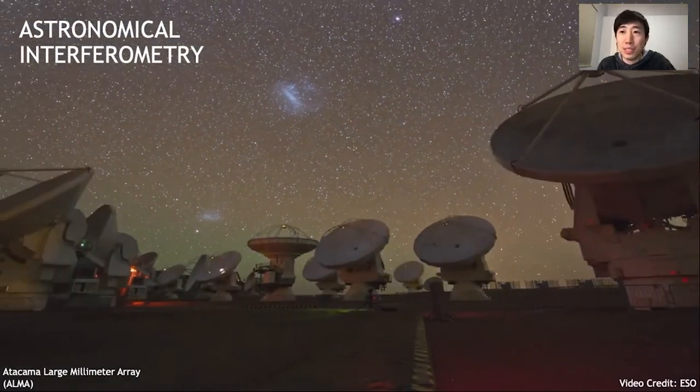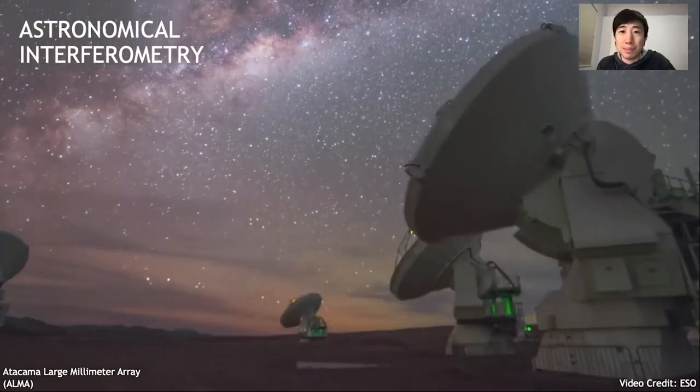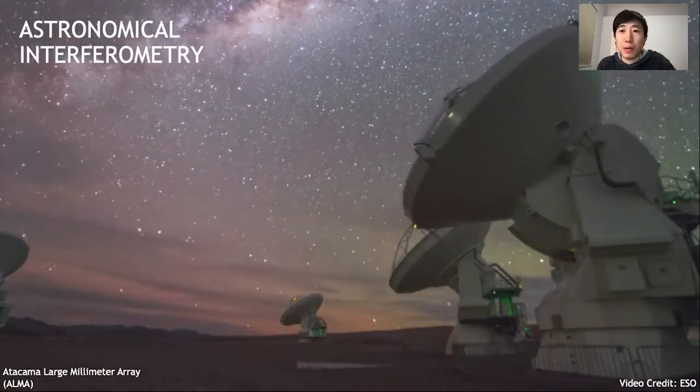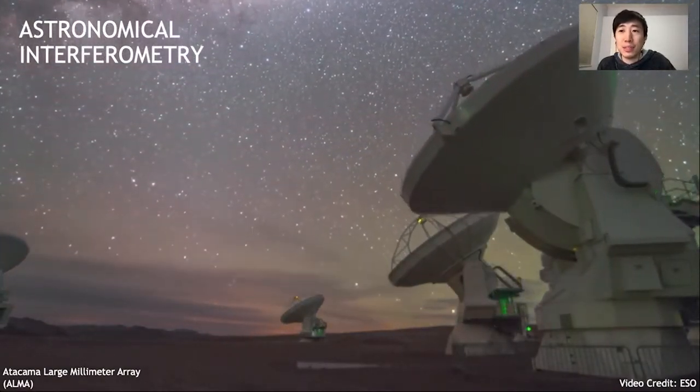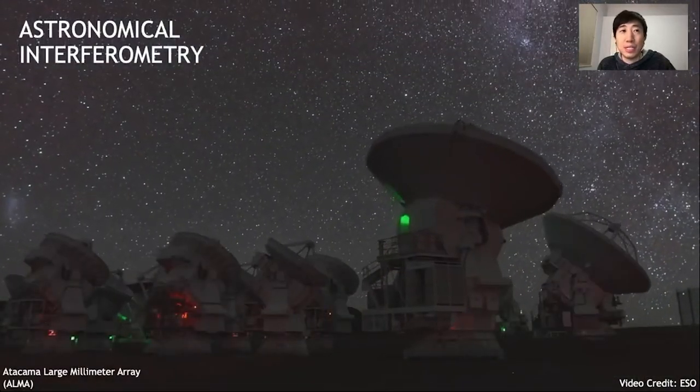This results in very high resolution images of astronomical objects. The trick is to use interferometry which combines different signals measured from pairs of telescopes and is most commonly used in radio astronomy.